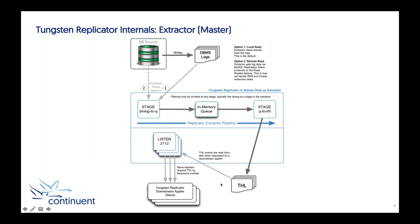Looking further into the internals of the extraction: we pull the data out into the database logs, and then we have this internal pipeline structure. Part of the pipeline's role is to take the data and perform additional steps that make the THL format more practical. We pull out that information and add a bunch of metadata — every transaction within the THL gets its own sequence number, and we also track metadata about where it was extracted from and what settings were in effect at the time of extraction.